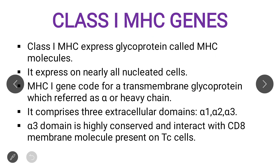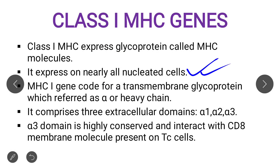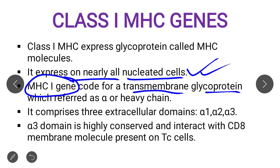First important point: Class 1 MHC molecule is an expressed glycoprotein called MHC molecule. The most important point to remember is that Class 1 MHC molecule is expressed nearly in all nucleated cells. If a question asks which MHC molecule is expressed in all nucleated cells, the answer is Class 1 MHC. Third point: MHC1 gene codes for a transmembrane glycoprotein, that is alpha chain.